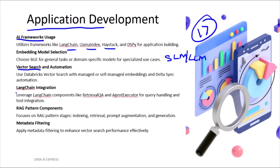This whole section is all about one thing: the RAG pattern — Retrieval Augmented Generation. You must know all four stages: Indexing, Retrieval, Augmentation, and Generation. If your RAG app gives vague results, what do you choose? Did you use metadata filtering to improve search performance? This section is a mix of theory and code.